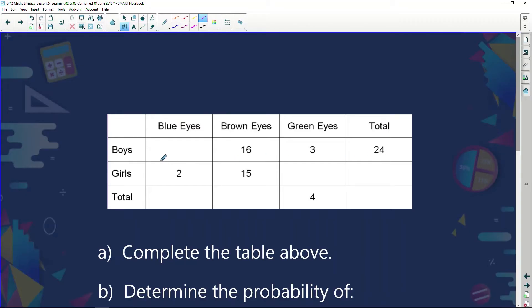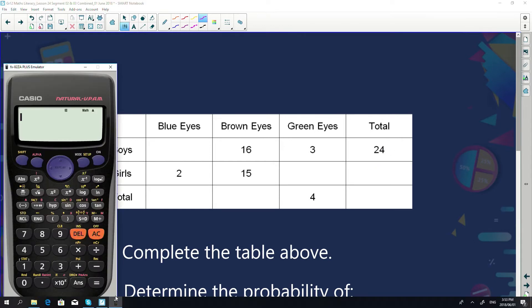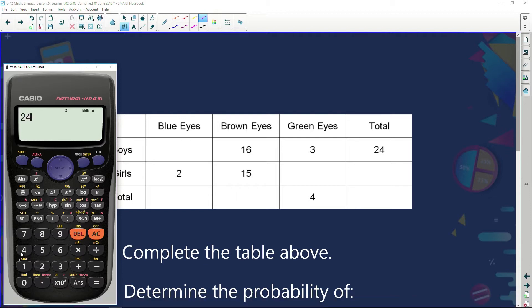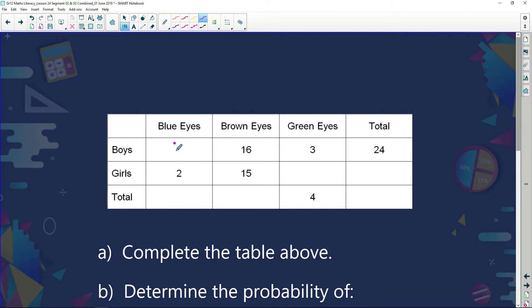Looking at my first row I can see I've got one missing value. I've got 24 boys who we questioned or gazed into their eyes. Of those, 3 had green eyes, of those 16 had brown eyes, which leaves us with an answer of 5. So we know 5 of our boys had blue eyes. This row we can't complete because there are two missing values. This row we can't complete because there are three missing values. So let's start looking in our columns.